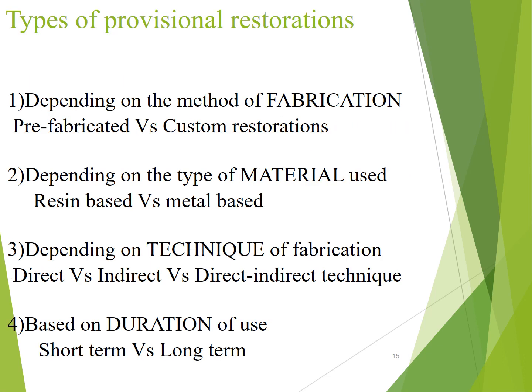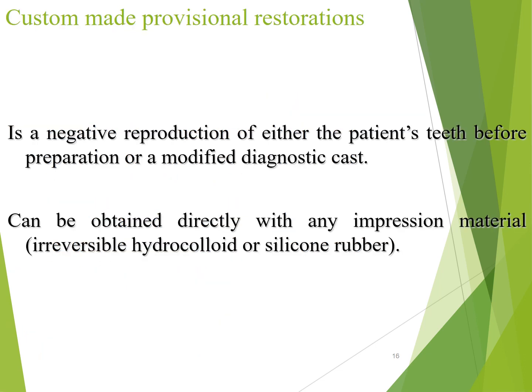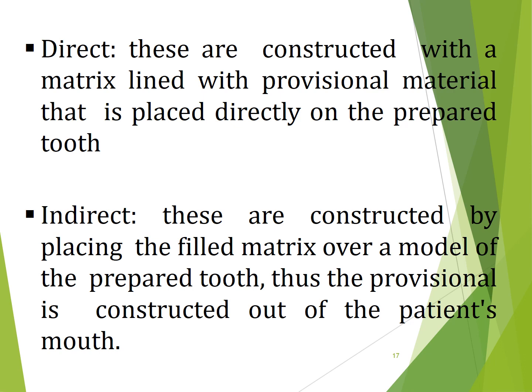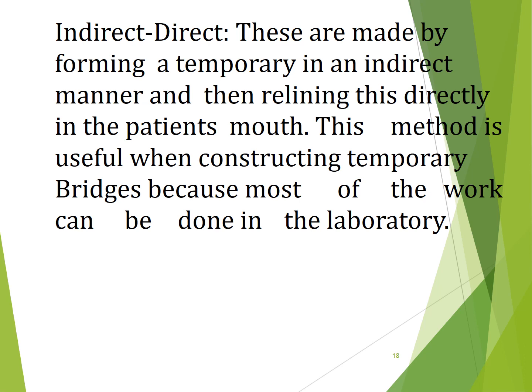Depending on the fabrication method, we have pre-fabricated versus custom-fabricated provisionals. A custom-made provisional restoration is a negative reproduction of either the patient's teeth before preparation or a modified diagnostic cast, obtained directly with an impression material. There are three techniques: direct — constructed with a matrix lined with provisional material placed directly on prepared teeth; indirect — constructed by placing the filled matrix over a model of the prepared tooth, fabricated outside the patient. The indirect technique is used in our college.